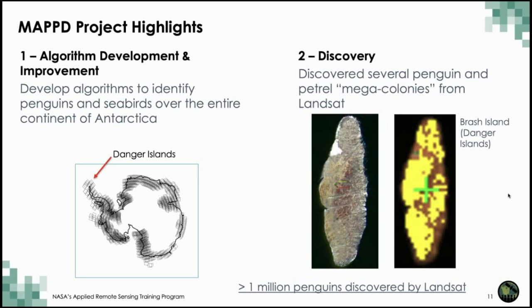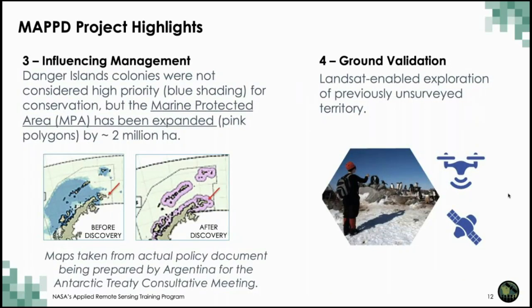These algorithms were used to discover several mega-colonies of penguins, with major implications for understanding seabird biogeography. In particular, a colony of Adélie penguins was found on the Danger Islands — a region scientists previously thought was not inhabited by this species. The Danger Islands are almost always covered in a thick layer of ice that precludes regular census. Prior Danger Island colonies were not considered high priority, but through this project the conservation area for marine protected areas was expanded — shown in pink polygons on the map — as a direct result of using Landsat data to identify penguin species in this region.